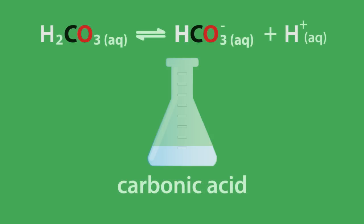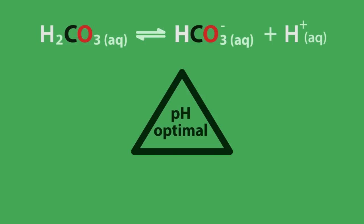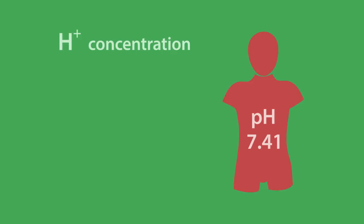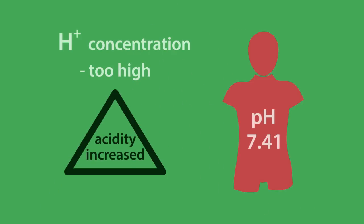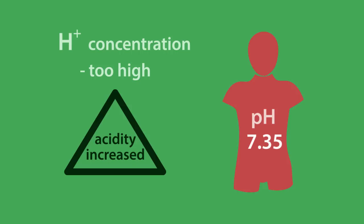The extent of the dissociation of carbonic acid is critical in maintaining the optimal pH. Our blood has a very specific pH, 7.41. If the concentration of protons is too high, it will increase the acidity of blood. Even at 7.35, the medical condition is known as acidosis.